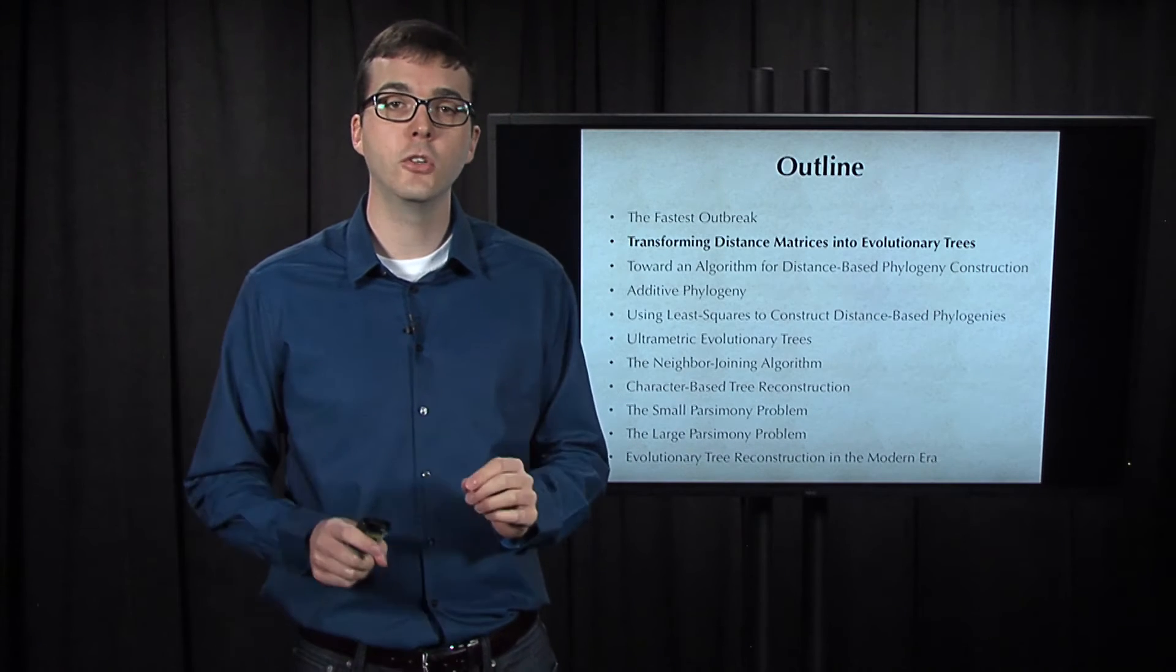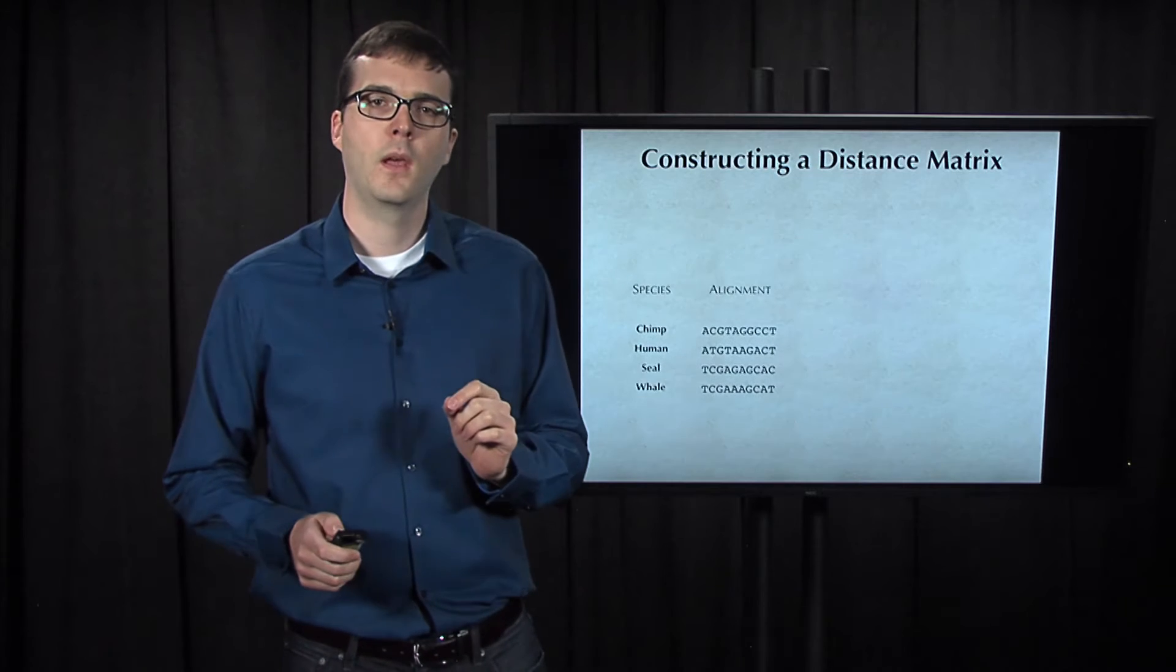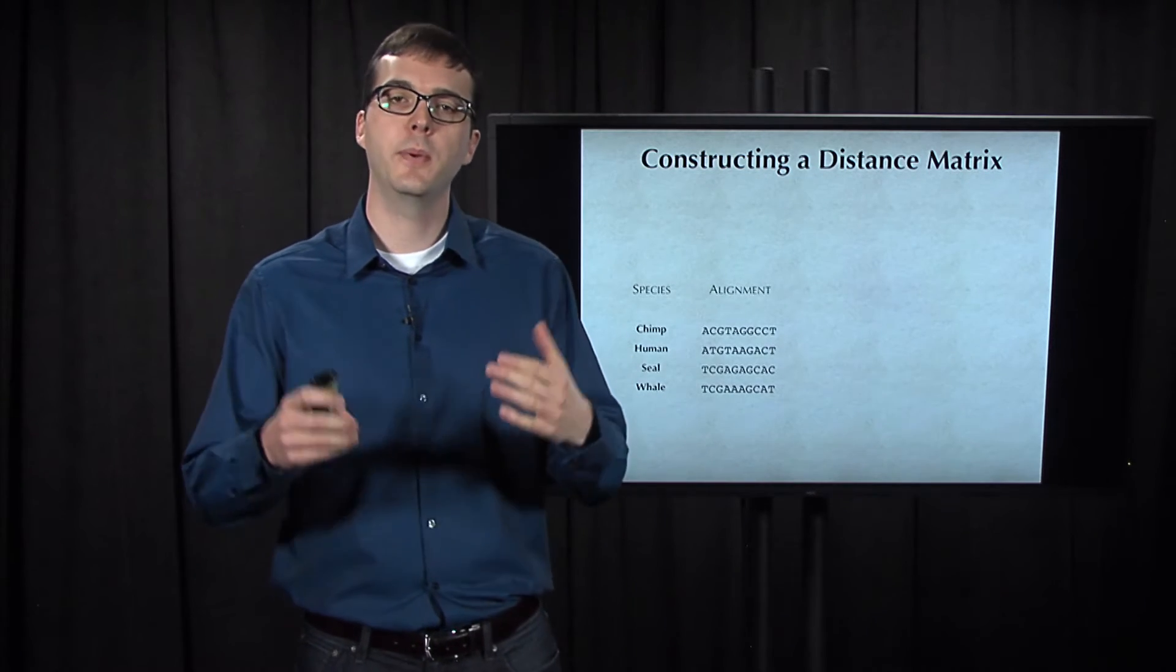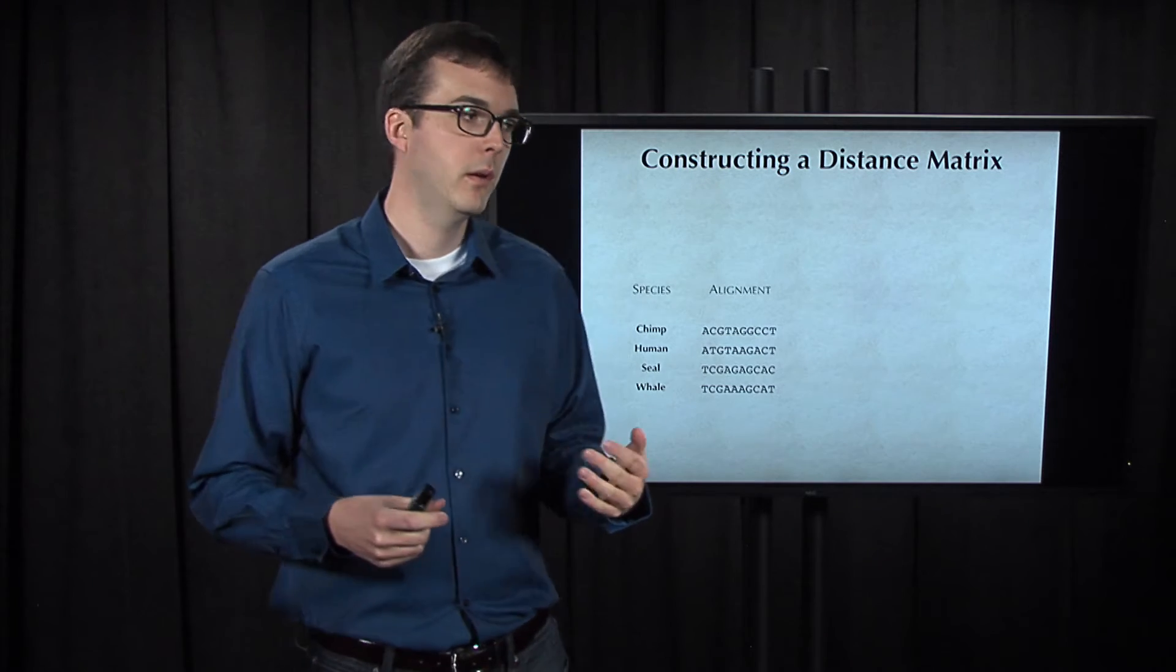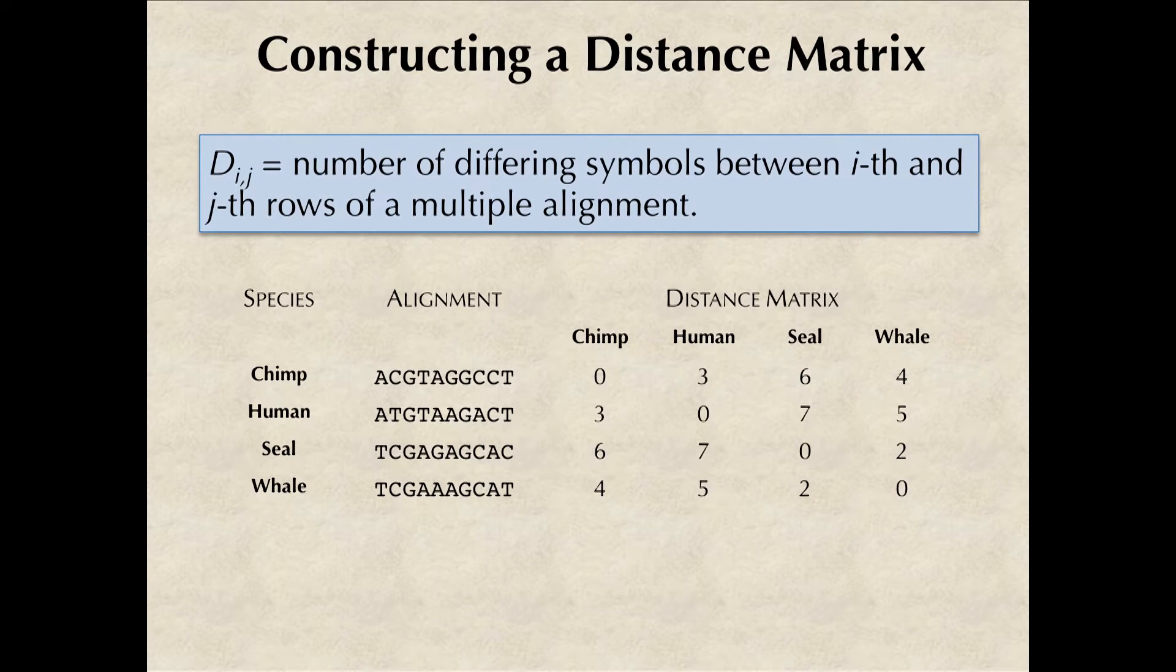The first way that we will construct evolutionary trees is by using a distance matrix. One of the most common ways of constructing such a matrix is to begin with a multiple alignment. Here is a toy multiple alignment that we'll use throughout this talk. We can form a distance matrix from this multiple alignment in which d sub i j is simply the number of differing symbols between the i-th and j-th rows of the multiple alignment, i.e. there are three mismatches between the first and second rows.